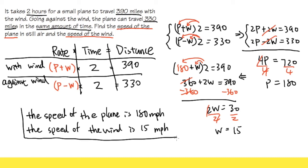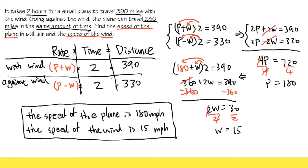This is a very typical word problem you'll encounter in the System of Equations section of an Algebra class. The key strategy is to organize all the information using rate × time = distance, write down the two situations on the side, fill in the known values, and use variables to write expressions for the rates. Now let's check out the next one.